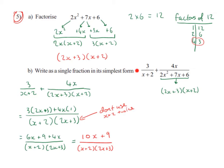We have 3 over x plus 2 plus 4x over 2x squared plus 7x plus 6. Now if you notice, this was our question to Part A and we worked that out to be this. So we can swap 2x squared plus 7x plus 6 for 2x plus 3 times x plus 2.